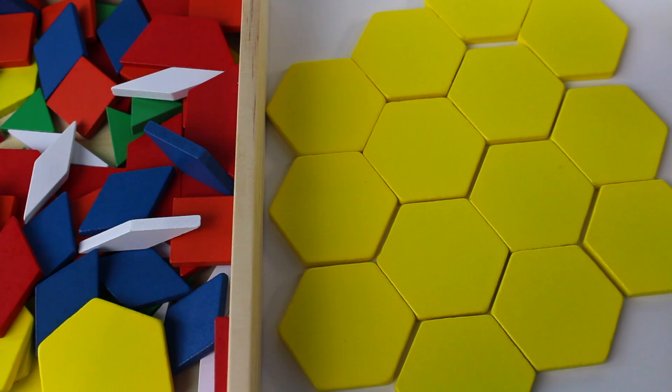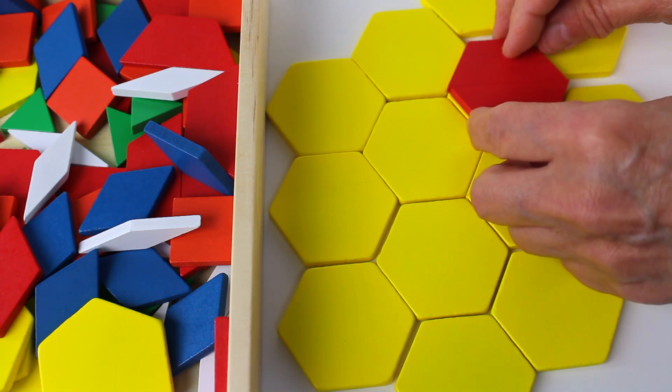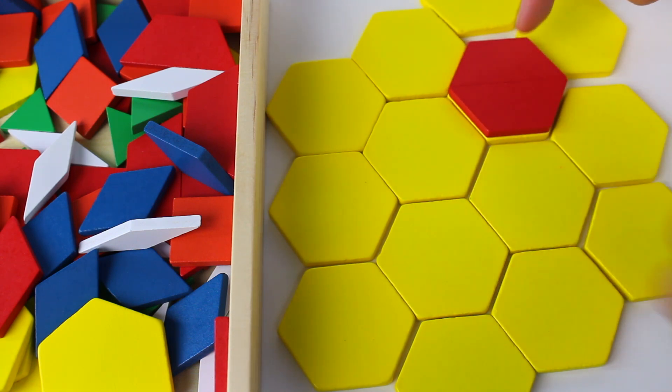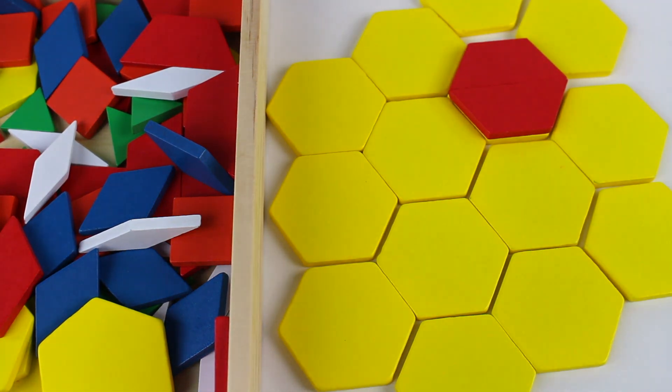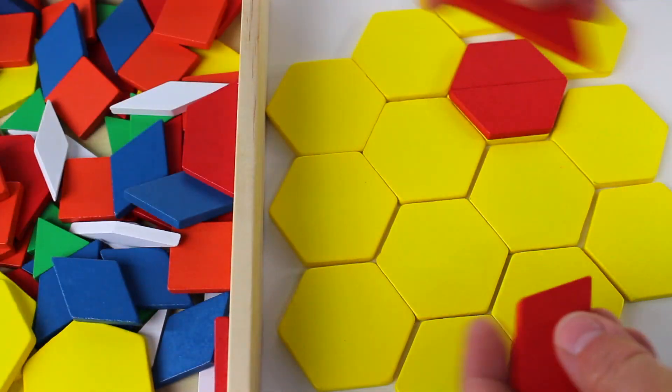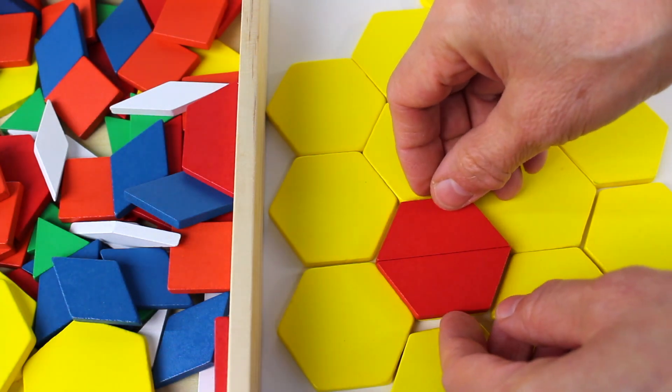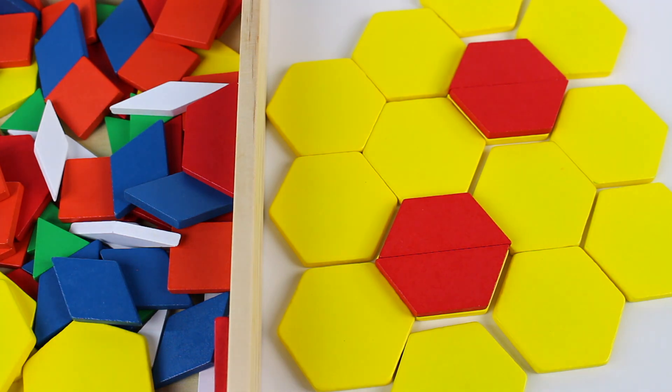There is something neat about the trapezoid and the hexagon. Look, if I match them, they make the same shape. With two trapezoids together, it has one, two, three, four, five, six sides, just like a hexagon. Let's make another. We'll take two more trapezoid and put them side by side on top of the hexagon. And look, it matches! Wow!